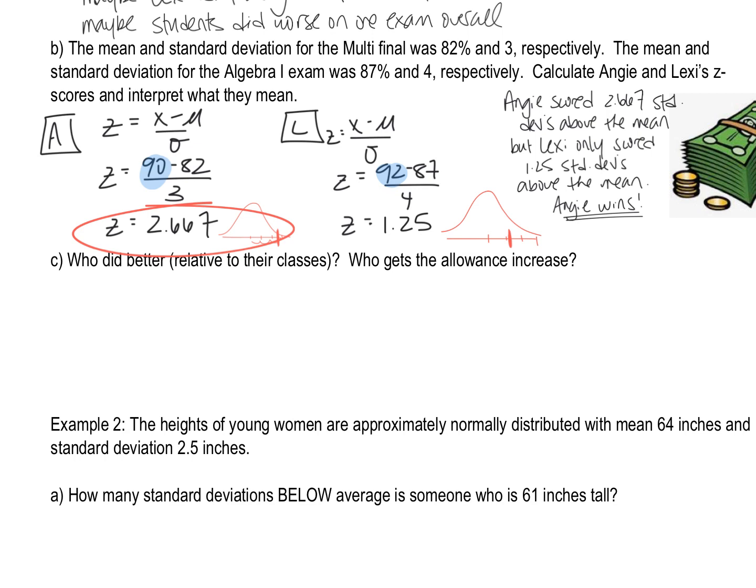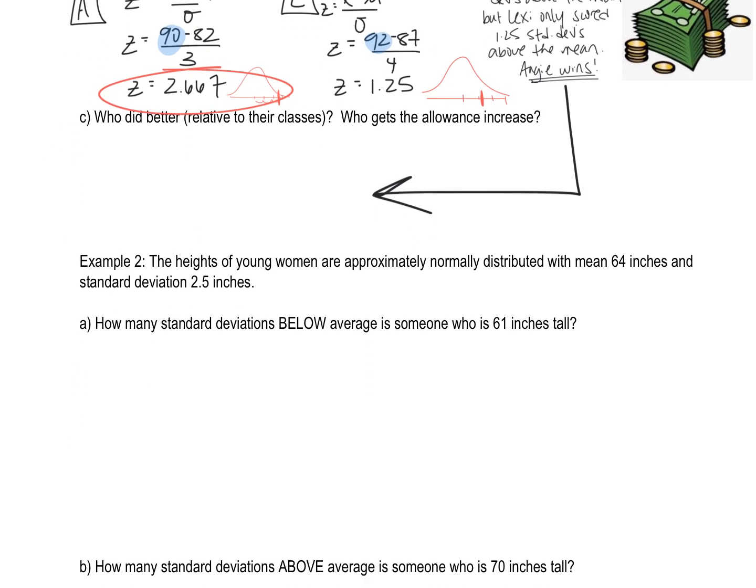She did better relative to her class. That's what this means. That's why we standardize so that we could fairly compare the two sisters. Who gets the allowance increase? Angie does. Okay, next question.